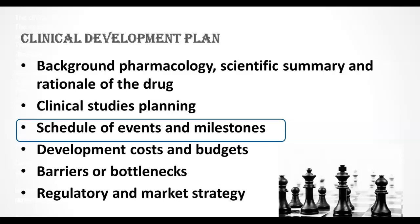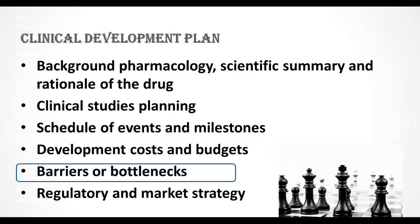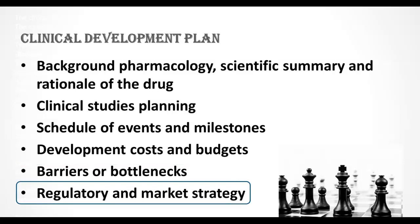This section addresses when the development program should be continued, when the program should be halted, and what external situations should be taken into account. Development costs and budgets outlines the cost of conducting planned clinical trials and other activities. Identification of potential issues and bottlenecks identifies what are the potential barriers, whether they can be mitigated, and what additional resources are required. The regulatory and market strategy section identifies the target markets, existing competition, and potential regulatory strategy for obtaining marketing approval.